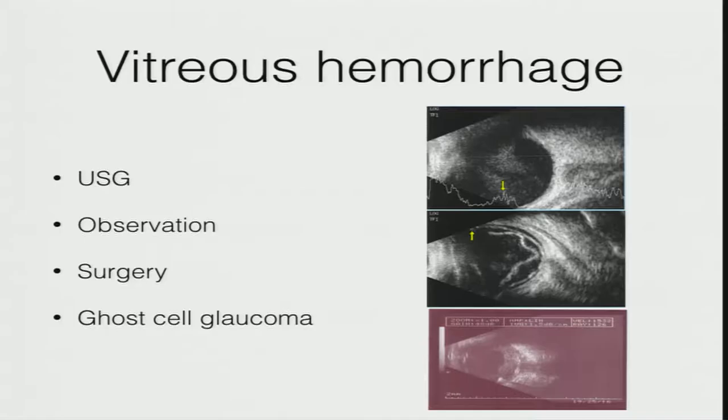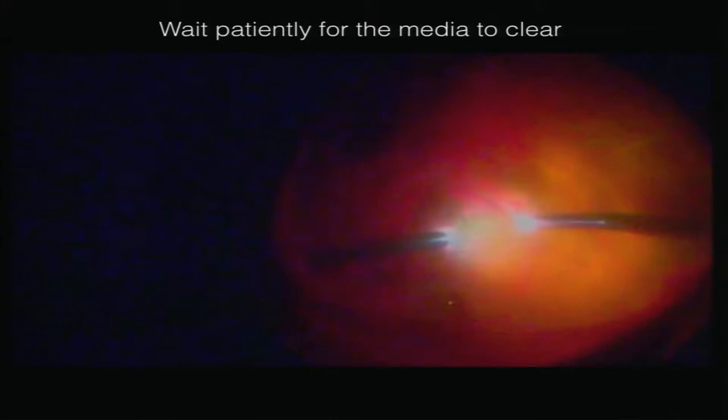Vitreous hemorrhage per se is not an urgent indicator for intervention. If ultrasound confirms only vitreous hemorrhage with no retinal detachment, you can wait and watch for spontaneous resolution. However, if there is retinal detachment, a foreign body, or secondary glaucoma, intervene earlier. When doing vitrectomy in these eyes, proceed slowly initially because under vitreous hemorrhage you are not sure what lies underneath. Ultrasound gives only a rough idea — you may miss a retinal detachment, so go slowly until you get a final view of the retina.